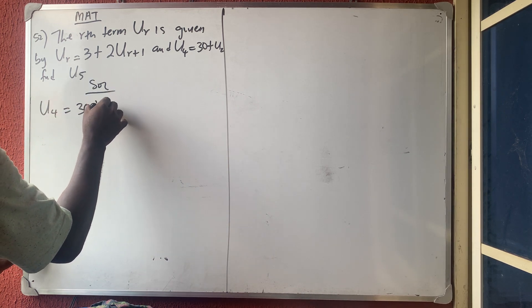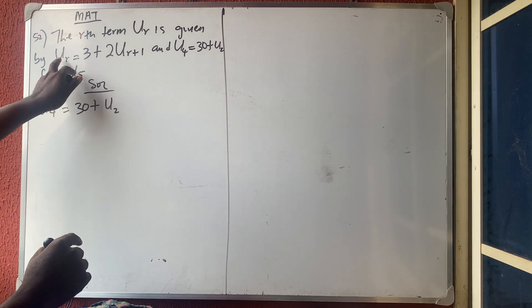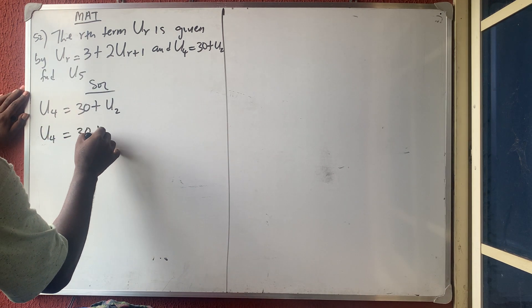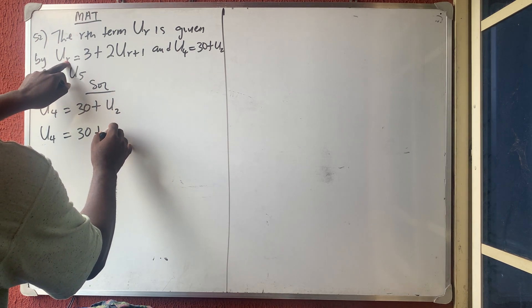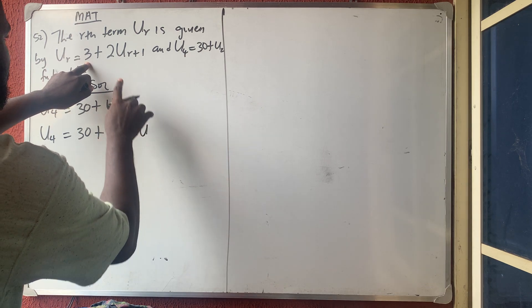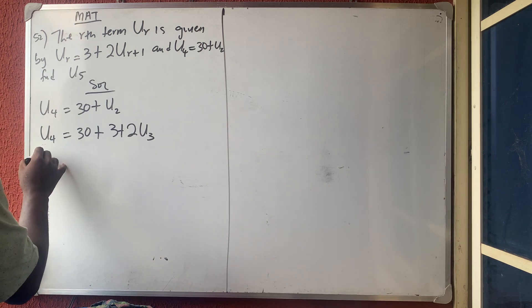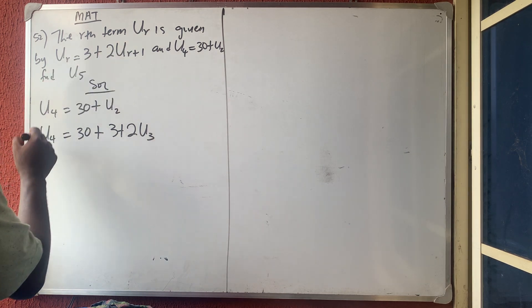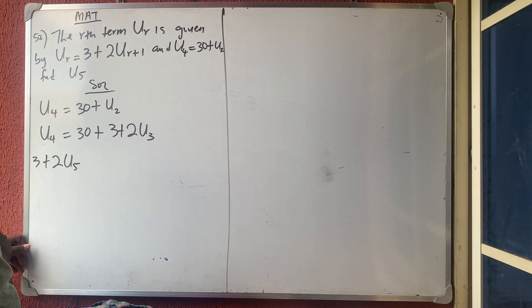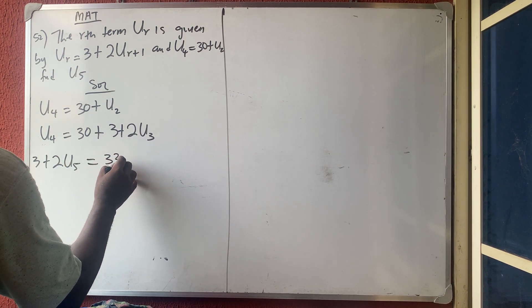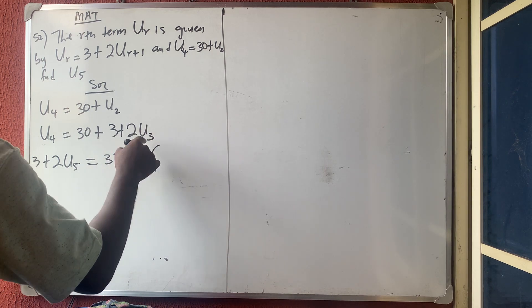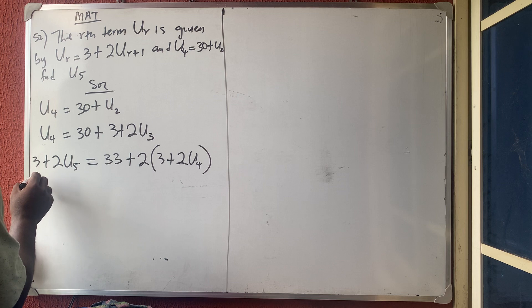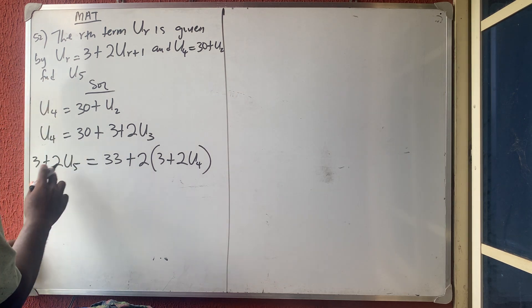From what they gave us, u4 = 30 plus u2. Now to find u2, wherever we see r in the main formula we put 2, so u2 = 3 plus 2·u3. Therefore u4 = 30 plus (3 plus 2·u3), which gives 33 plus 2·u3. And u3 is simply 3 plus 2·u4.